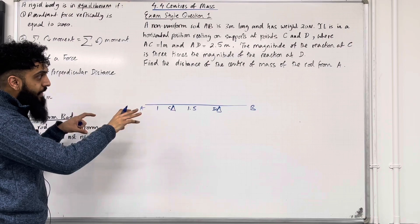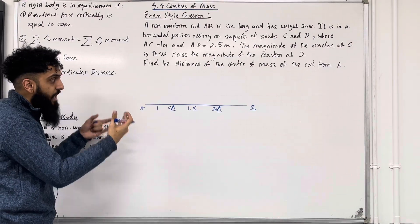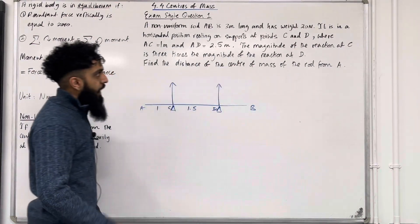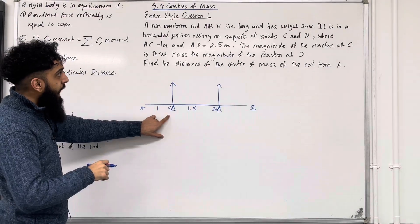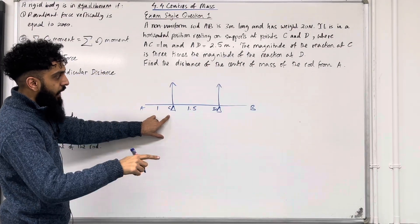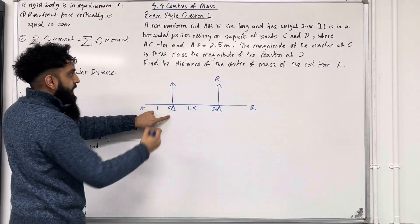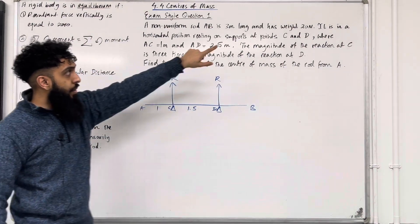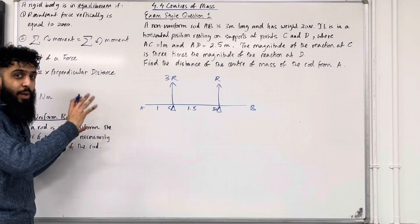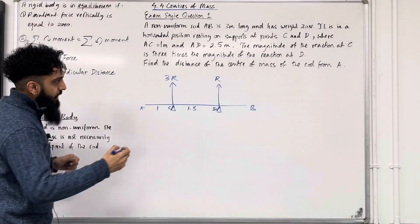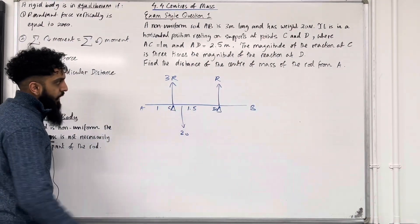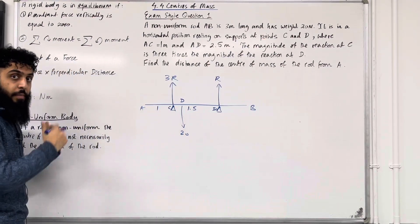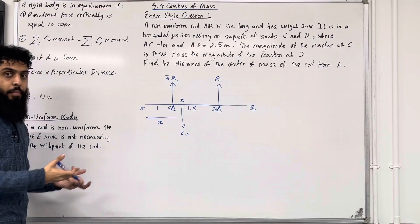This non-uniform rod AB is resting on the supports, hence the supports will exert a normal reaction on the rod. Here is my first normal reaction and here is my second normal reaction. It is given that the magnitude of the reaction at C is 3 times the magnitude of the reaction at D. So at D we can call the reaction R, hence the reaction at C has to be 3R. The weight of the non-uniform rod is 20 Newtons. We want to find the distance of the centre of mass of the rod from A, so that distance we can call X. This is my complete force diagram.